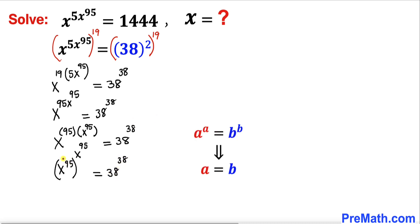And now we got a certain pattern: x power 95, whole power x power 95, equals to on the right hand side 38 power 38. So therefore we are going to use this basic rule. Therefore by comparison we can write this as x power 95 equals to 38.